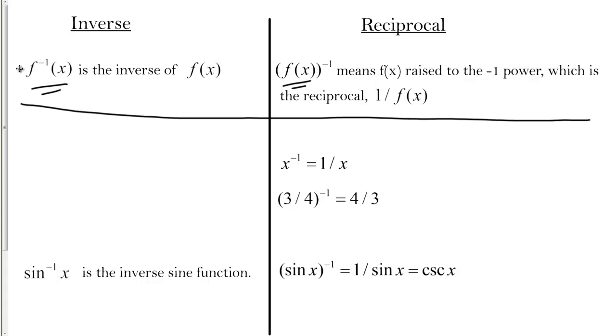On the other hand, if the notation looks like this instead, the entire function F of X to the negative one, this by convention means F of X raised to the negative one power. That does mean the reciprocal, one over F of X. Really, just the placement of the negative one symbol is what determines whether you're talking about the inverse or the reciprocal in this case. Just make sure you study and remember those differences so you can read and both write the math correctly.